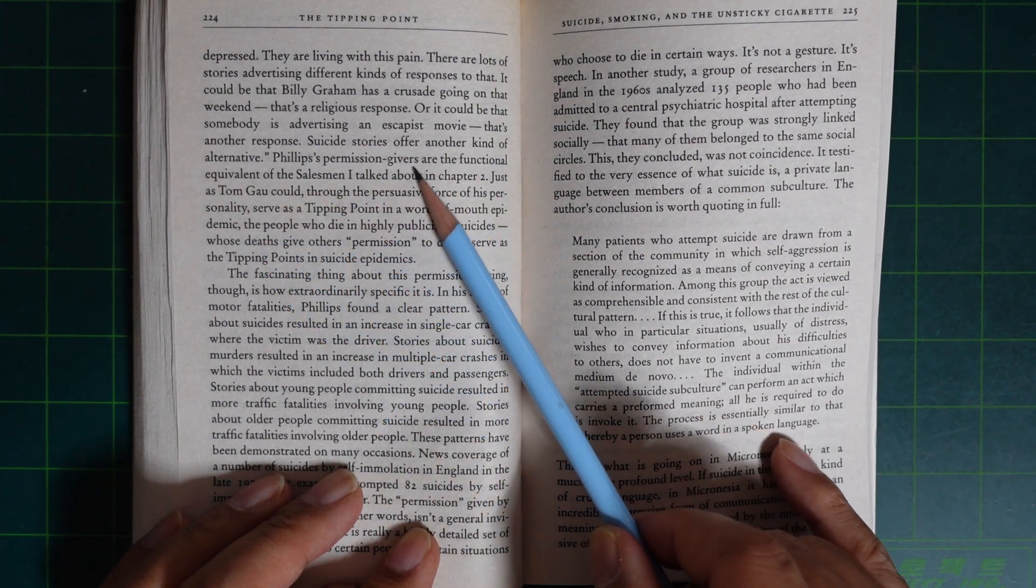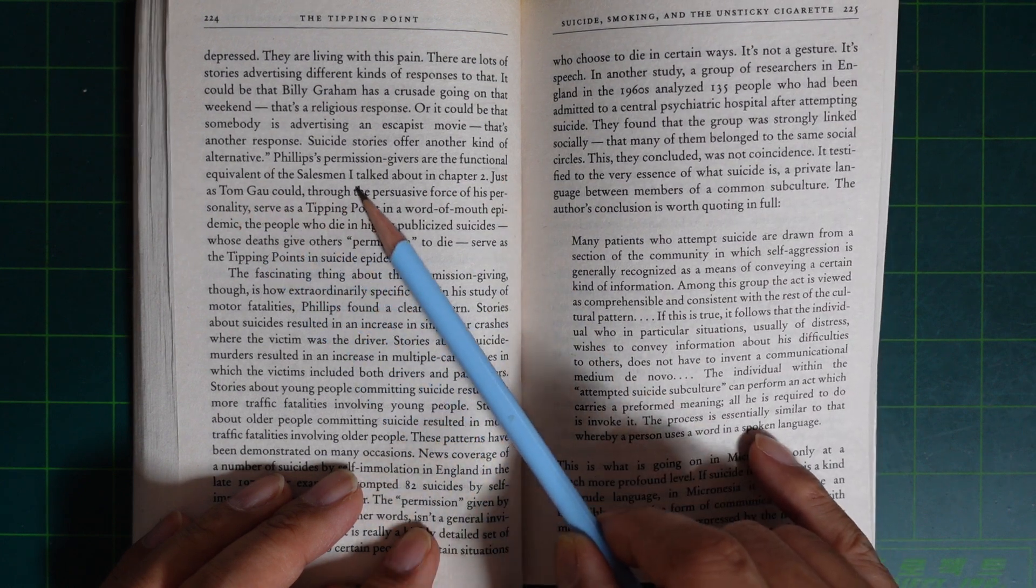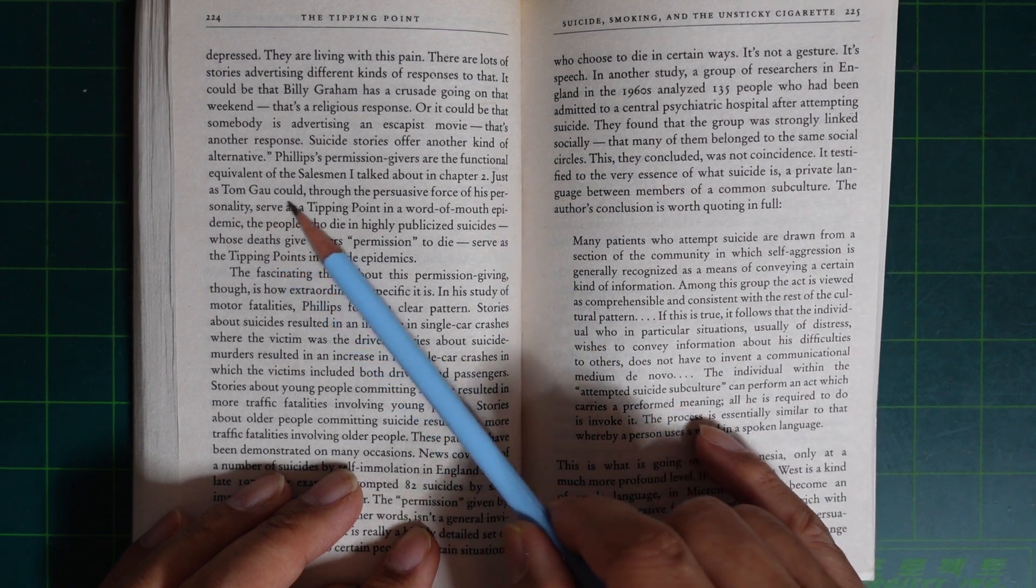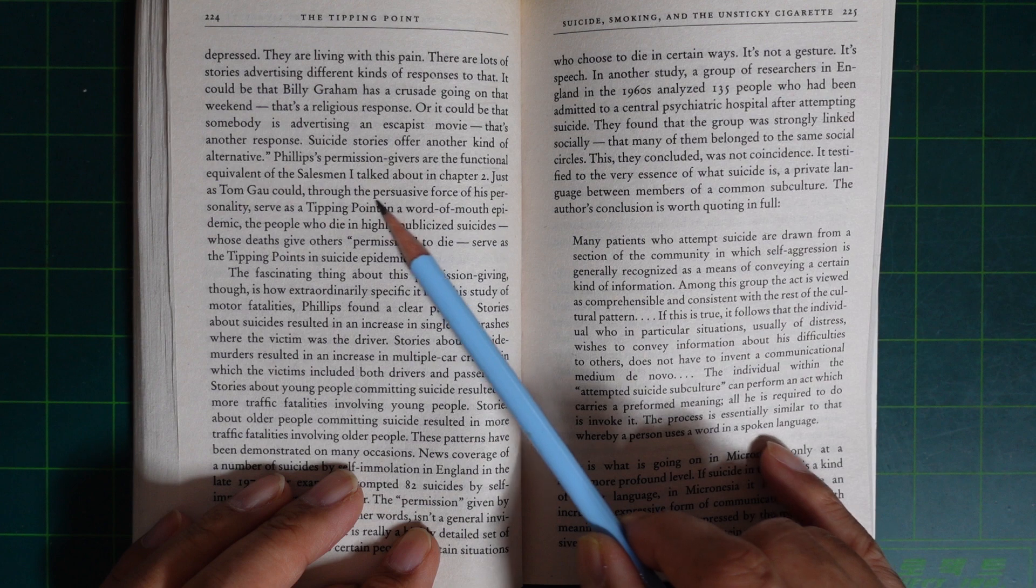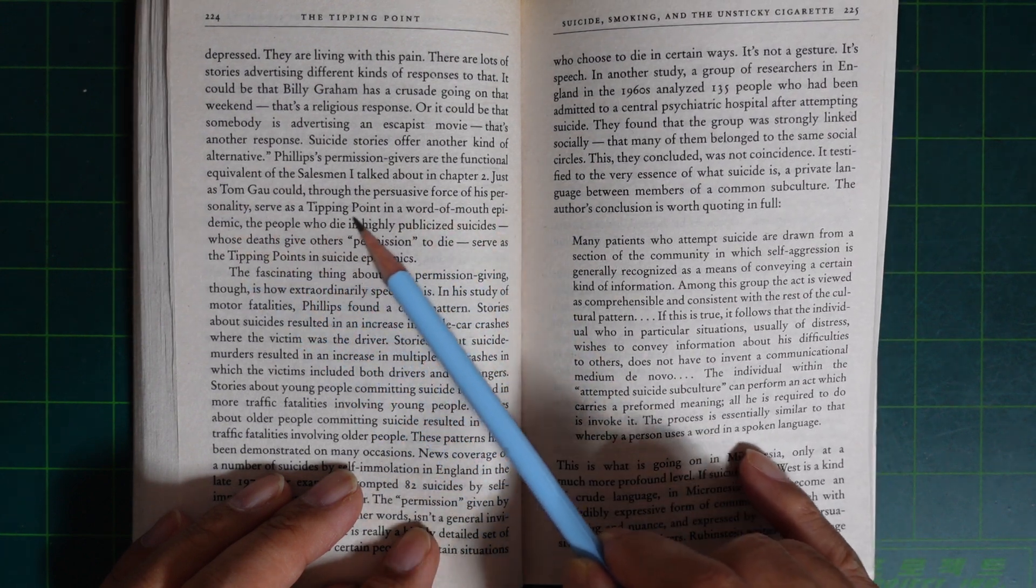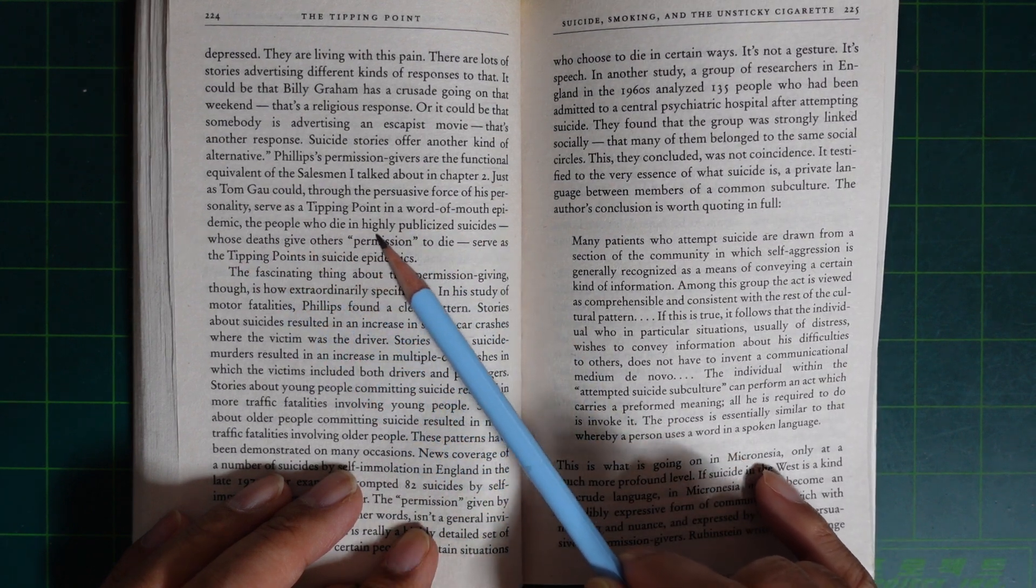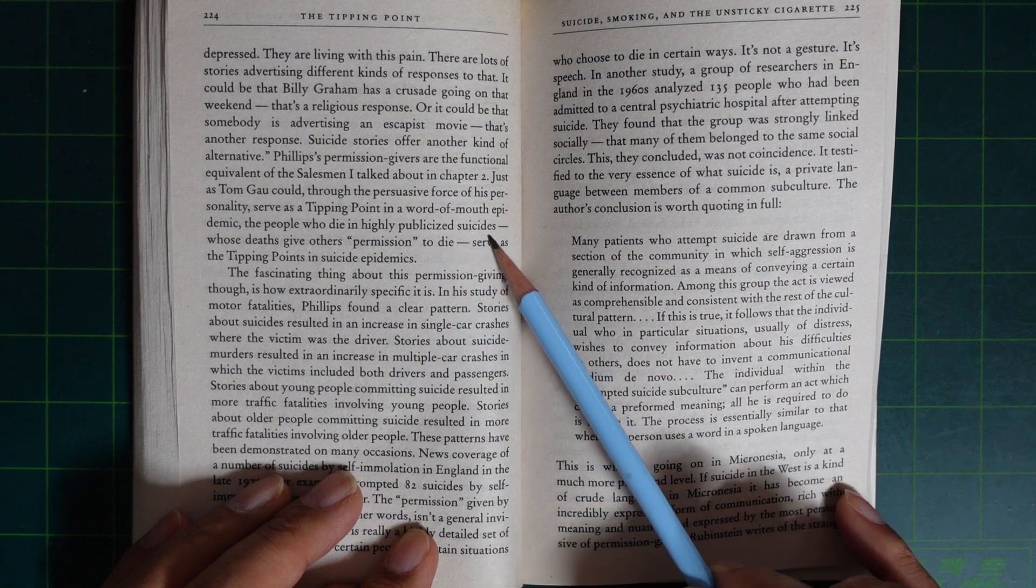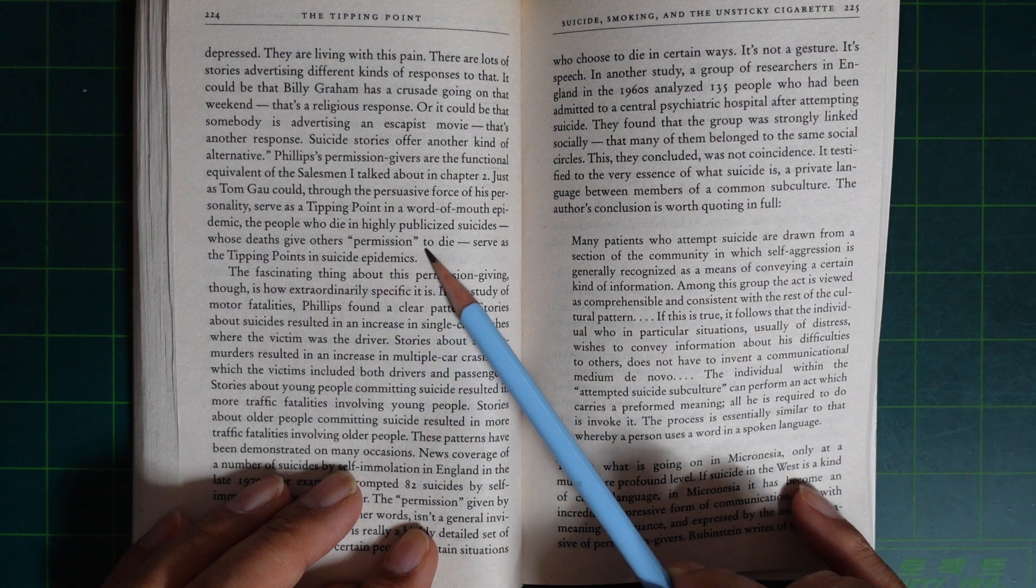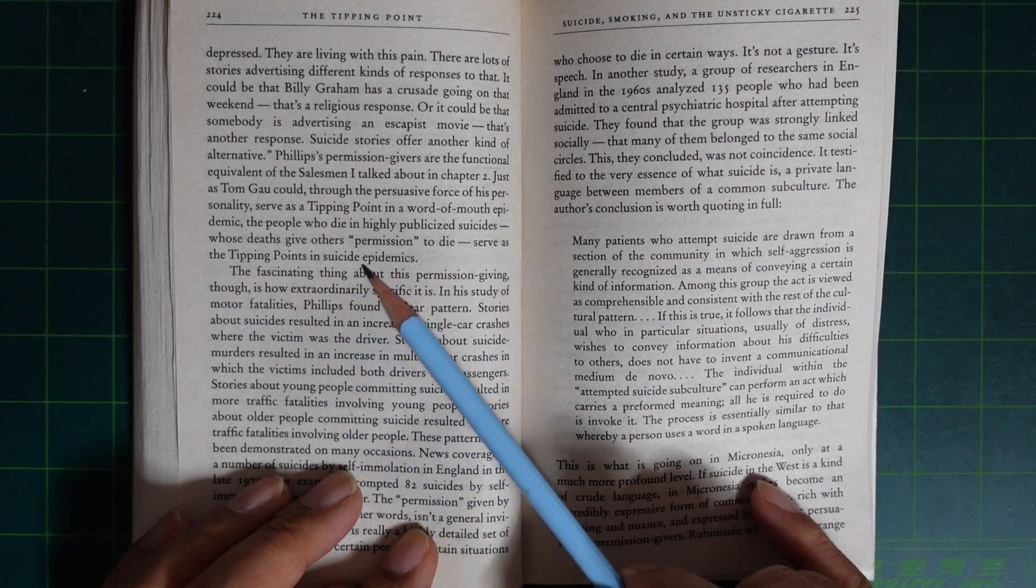Phillips's permission givers are the functional equivalent of the salesmen I talked about in chapter two. Just as Tom Gau could, through the persuasive force of his personality, serve as a tipping point in a word-of-mouth epidemic, the people who die in highly publicized suicides, whose deaths give others permission to die, serve as the tipping points in suicide epidemics.